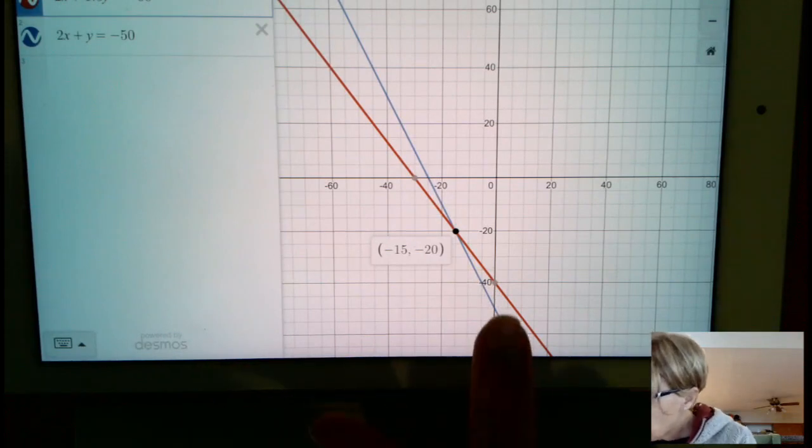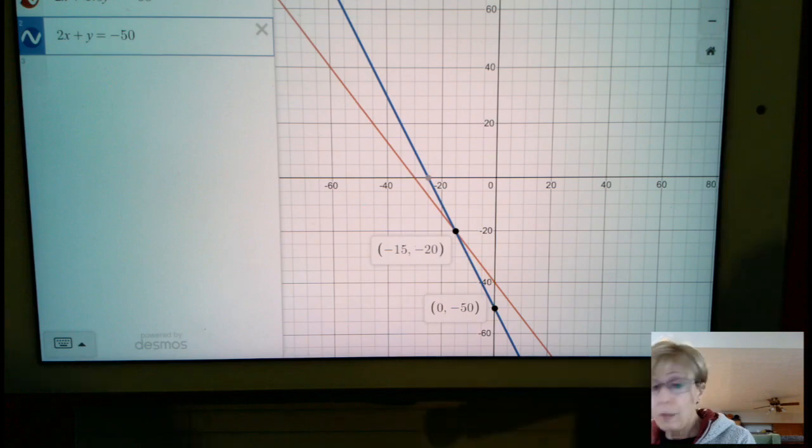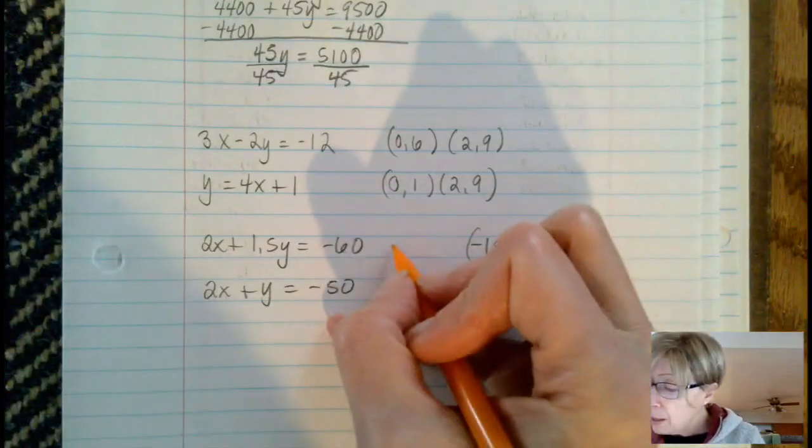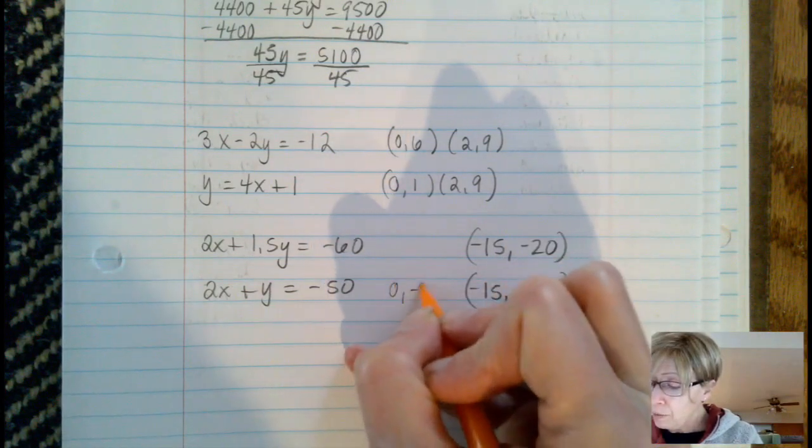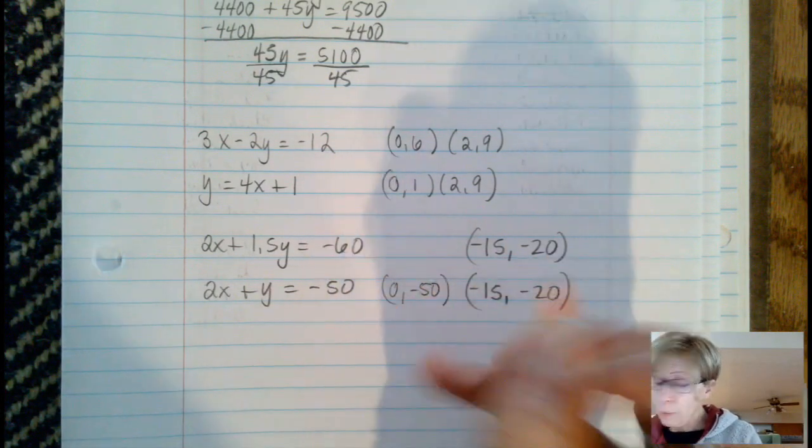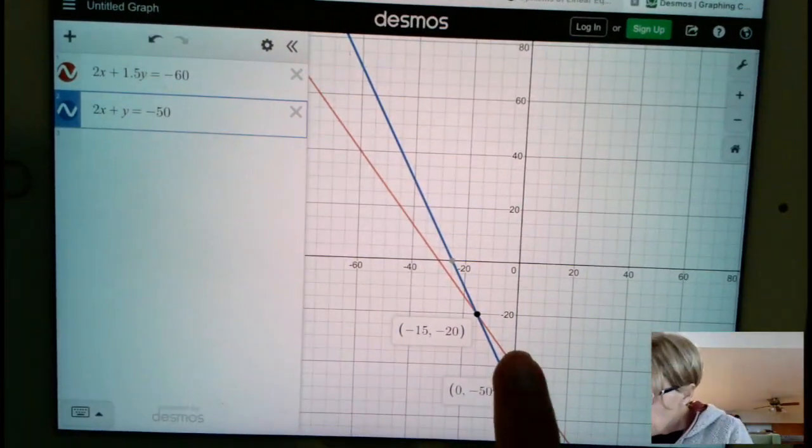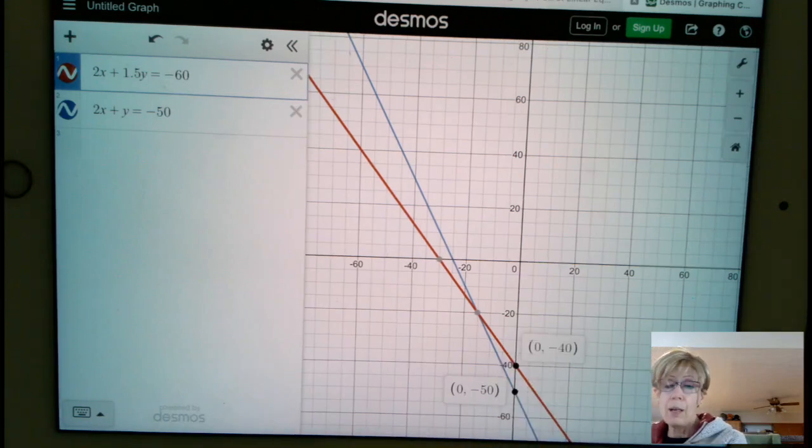If we come back over here and look, the blue line crosses the y-axis down here at 0, negative 50. So one of the lines is going to be 0, negative 50. That's actually the second one. The red line was the first line that we drew, and its y-intercept here is 0, negative 40. That's the nice thing about Desmos—use that to help you.